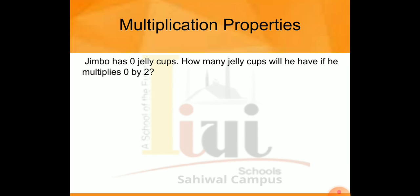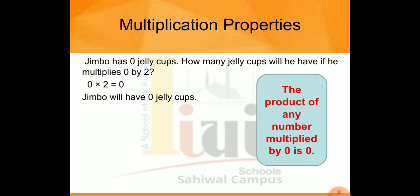On the same page, another example is given: Jumbo has zero jelly cups. How many jelly cups will he have if he multiplies zero by two? Jumbo has no jelly cups — zero. If we multiply zero by two, the answer is zero. Jumbo will have zero jelly cups. This means that whenever we multiply any number by zero, or zero by any number, the answer is always zero.